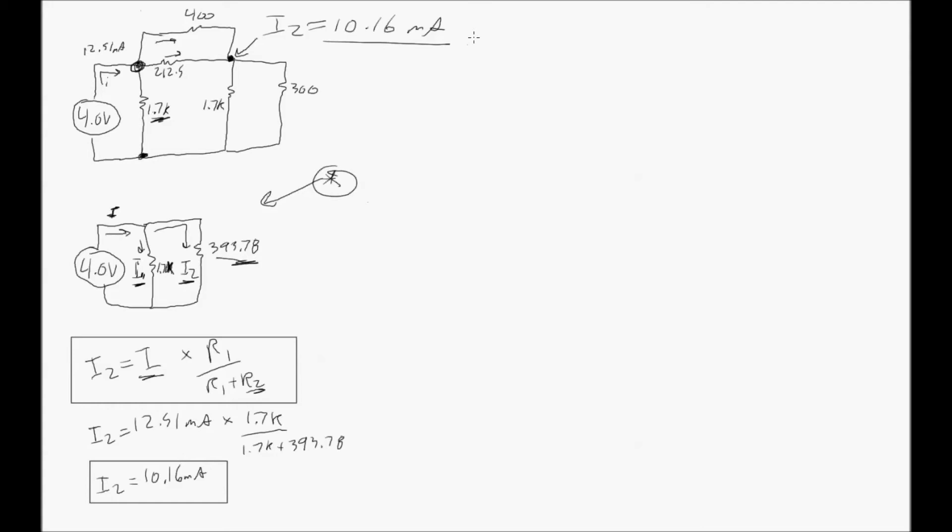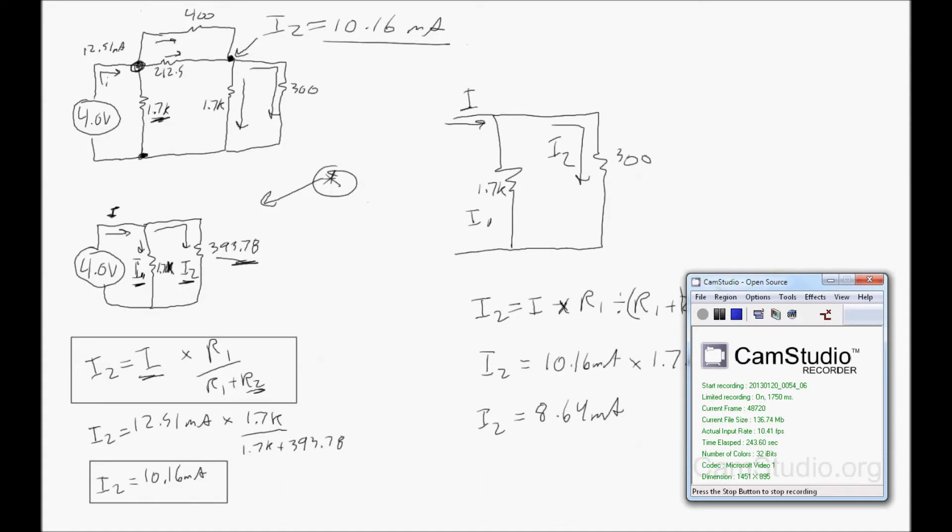You don't have to do any more equivalent resistances. It's just the 1.7K and 300 ohm resistor. You have to do another current divider at that point. So looking at the second branch point,